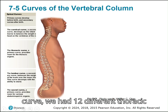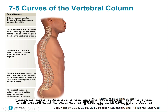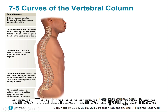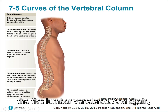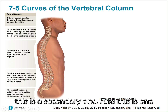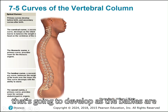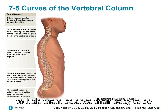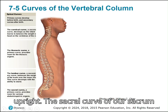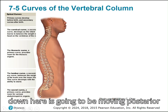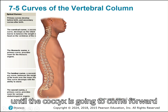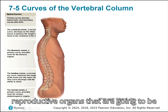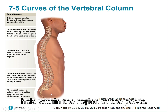The thoracic curve has 12 thoracic vertebrae curving posteriorly. We go back anteriorly with our lumbar curve, which has five lumbar vertebrae — another secondary curve that develops as babies learn to walk, helping them balance upright. The sacral curve moves posteriorly until the coccyx comes forward again, providing space for the reproductive organs held within the pelvis region.